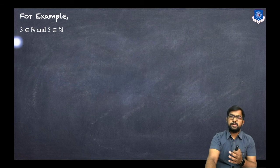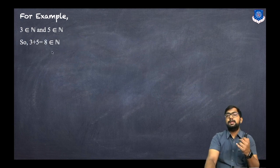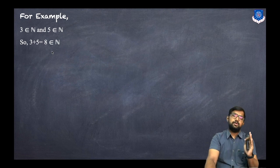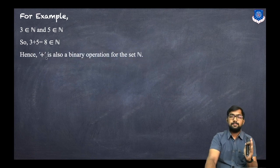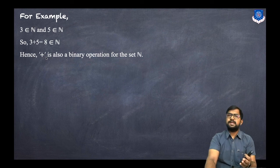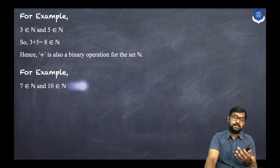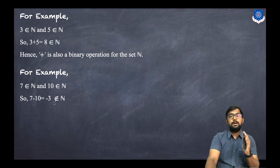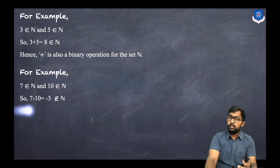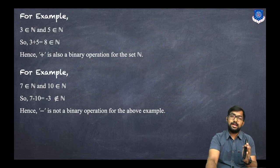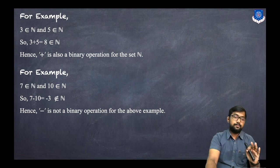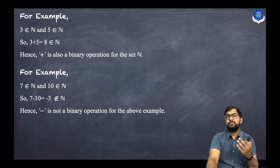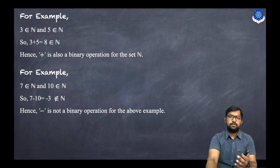For example, 3 belongs to N (natural numbers) and 5 belongs to N, so 3 plus 5 equals 8, which also belongs to N. Hence, the plus operation is a binary operation for the set of natural numbers. However, if we take 7 and 10 in N and use subtraction, 7 minus 10 equals negative 3, which does not belong to N. Hence, subtraction is not a binary operation on natural numbers, because after applying the operation we get an answer that does not belong to the set.